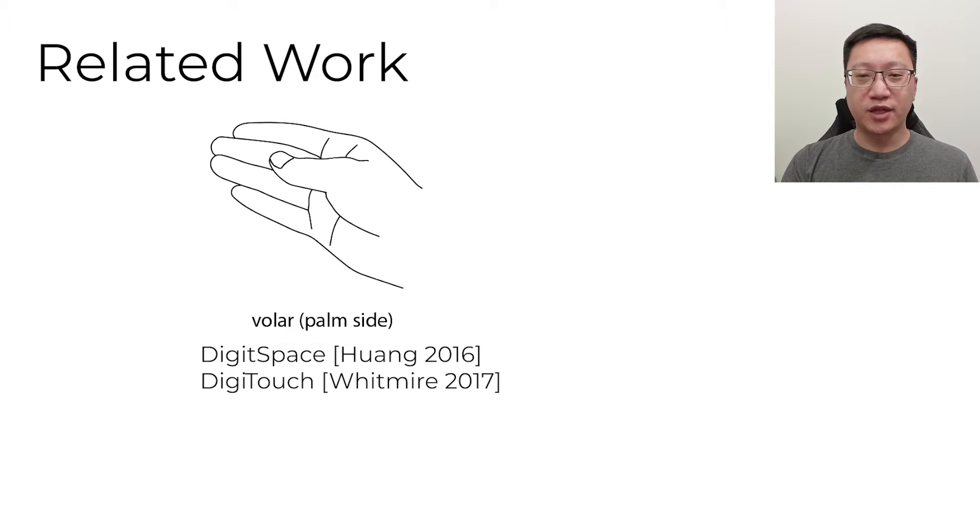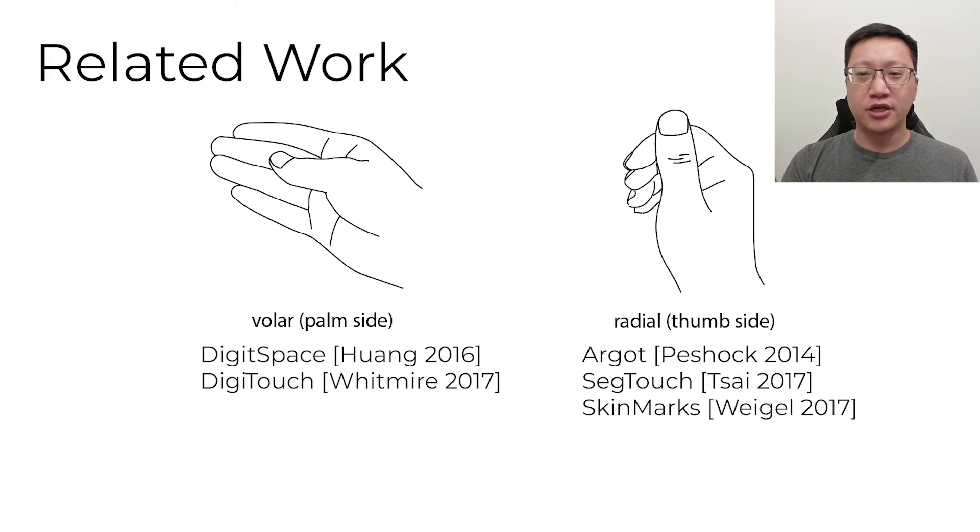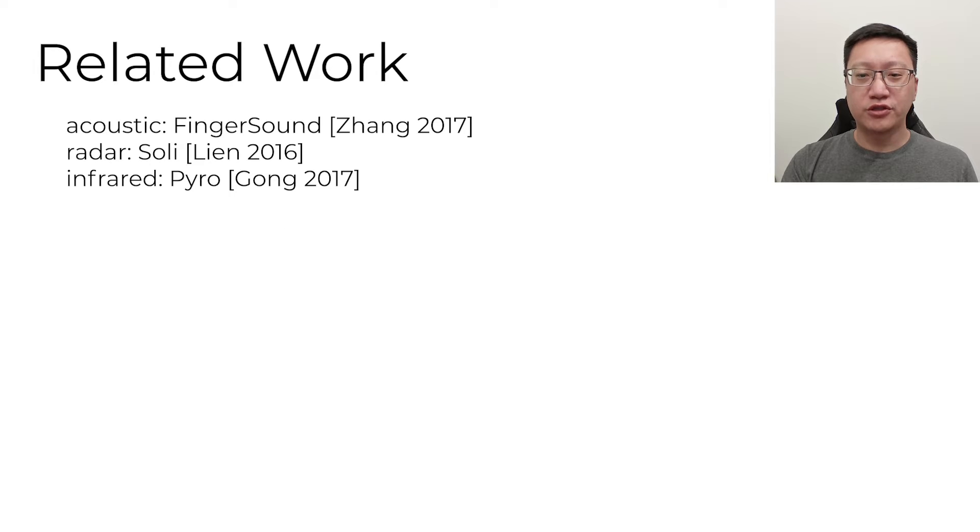Researchers have explored different types of thumb-to-finger microgestures, including where the thumb makes contact on the volar or palm side of the fingers, where the thumb makes contact with the radial or thumb side of the index finger. Researchers have recognized microgestures in a variety of ways, including using acoustic, radar, and infrared sensors.